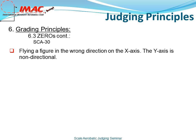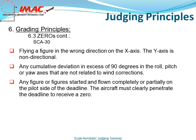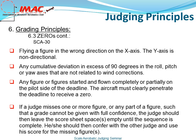Let's continue with zeros. Flying a figure in the wrong direction on the x-axis will result in a zero. The y-axis is non-directional. Any cumulative deviation in excess of 90 degrees in roll, pitch, or yaw axis that are not related to wind correction will result in a zero. Any figure or figures started and flown completely or partially on the pilot side of the deadline — the aircraft must clearly penetrate the deadline — to receive a zero. If a judge misses one or more figures or a part of a figure such that the grade cannot be given with full confidence, the judge should leave the score sheet spaces empty until the sequence is complete, then confer with the other judge and use his score for the missing figure.